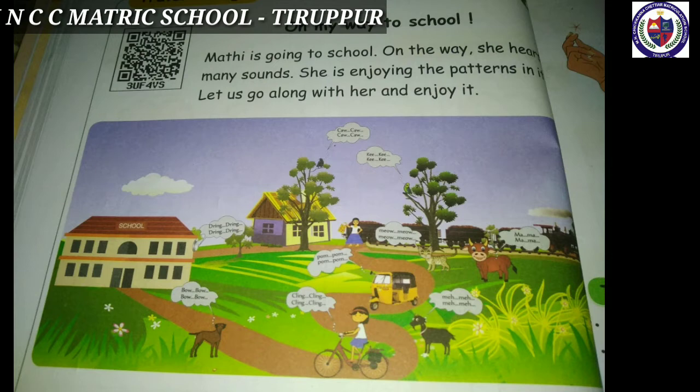You can hear birds chirping, dogs barking, cows mooing, and horns of buses, autos, and cars. We will see what Madhi is hearing when she goes to school — birds chirping, a cow, a goat, a cat, and a street dog. So many different sounds Madhi is hearing when she is going to school. You are able to identify the different sounds of birds and animals.